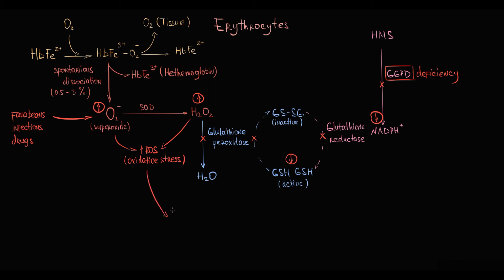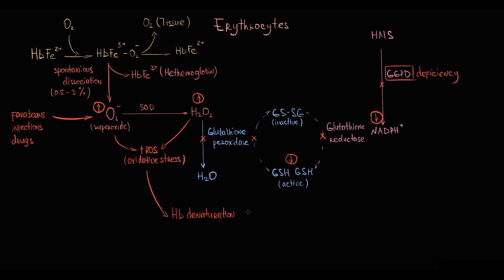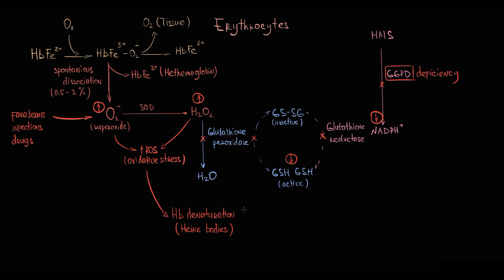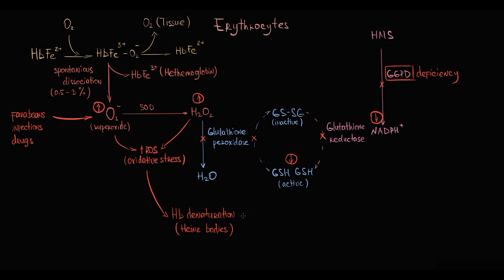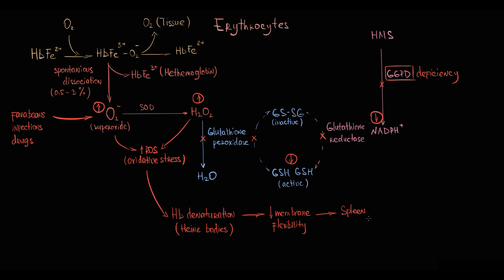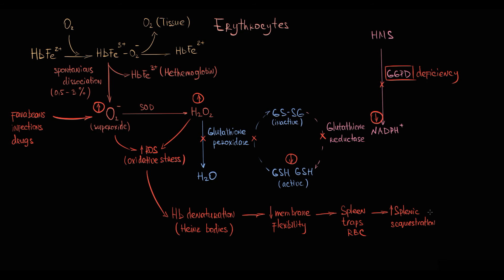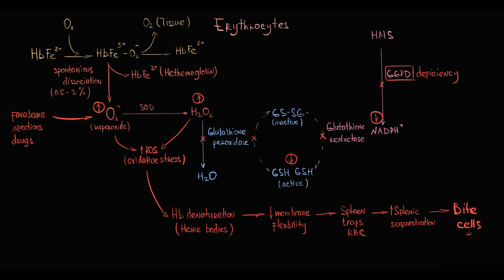Increasing amounts of reactive oxygen species damage hemoglobin structure. Specifically, hydrogen peroxide causes denaturation of hemoglobin, and the pieces of denatured hemoglobin inside the erythrocyte are known as Heinz bodies. When Heinz bodies come into contact with the erythrocyte membrane, the denatured hemoglobin decreases membrane flexibility, increasing membrane rigidity. When these rigid erythrocytes pass through the spleen — which filters blood — they get stuck. The trapped erythrocytes are then removed from circulation by splenic macrophages in a process called splenic sequestration. The activity of splenic macrophages results in production of so-called bite cells, and the amount of normal red blood cells decreases.